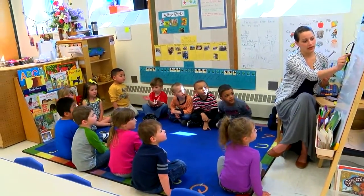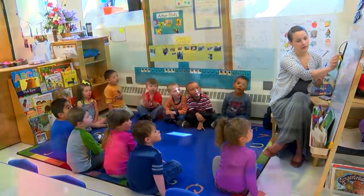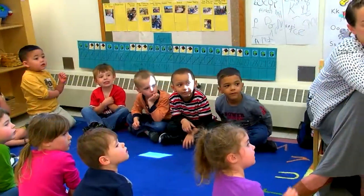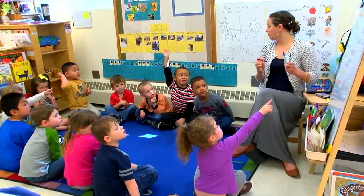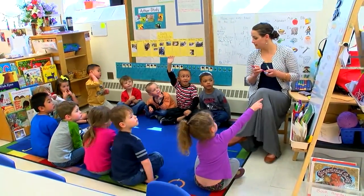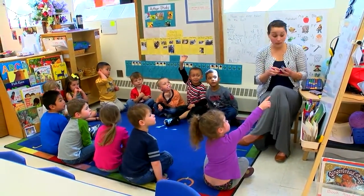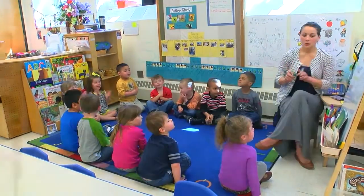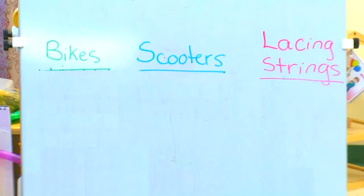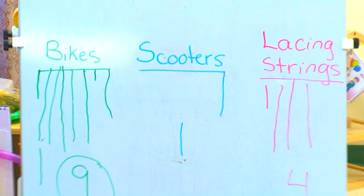And then the children count out their tallies. Which one has the most? Green! What's green? The bikes! When children are analyzing their data, they're going to naturally do another important math concept, which is comparison — comparison of groups.